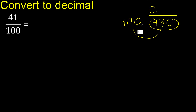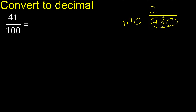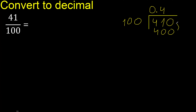It is not less. 100 multiplied by which number is nearest to 410 but not greater? Multiplied by 5 is 500 — is greater. Multiplied by 4 is 400 — is not greater.